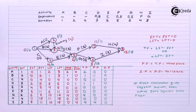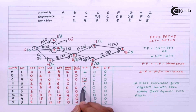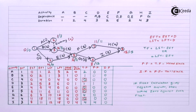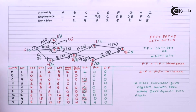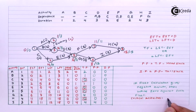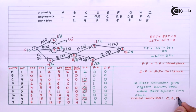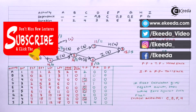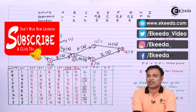So with this we are done with the calculations. My critical activities are those with total float equal to 0: C, E, F and H. So my critical path runs through activities C, E, F and H. Thanks for watching this video. Do subscribe to our channel Ikeda.